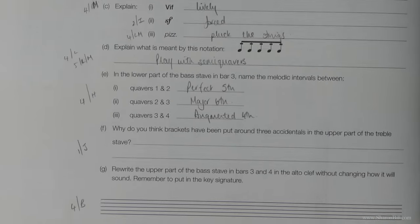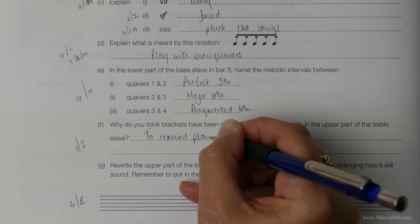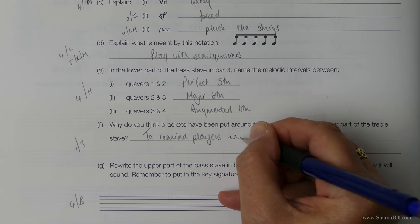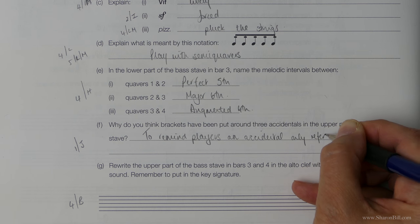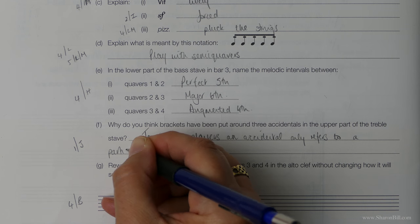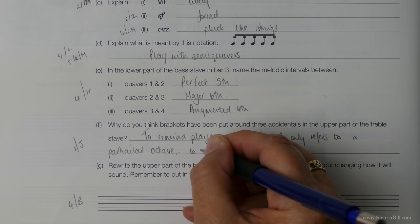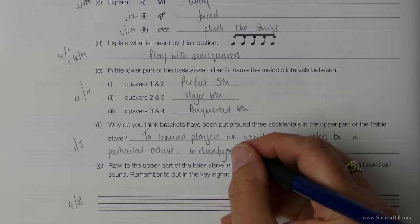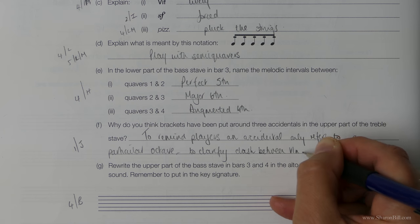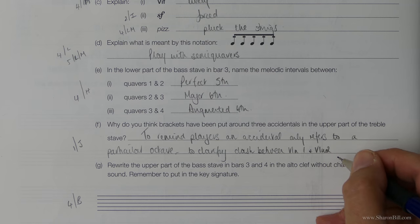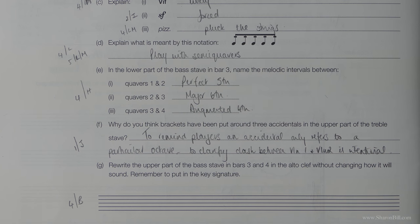So, how to put that into words. We'll just say, to remind players, an accidental only refers to a particular octave. I think that will suffice. You could also say, to clarify, clash between violin one and violin two is intentional.